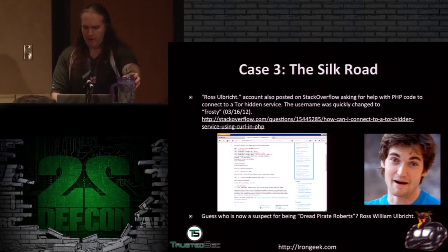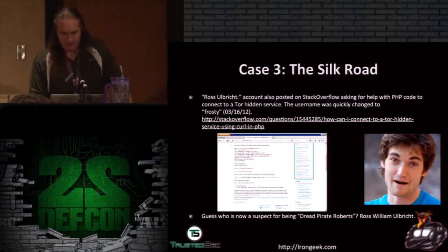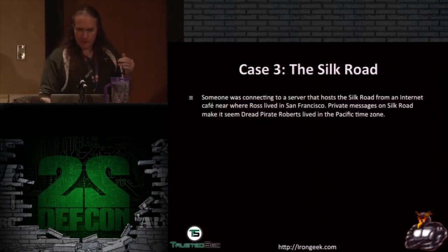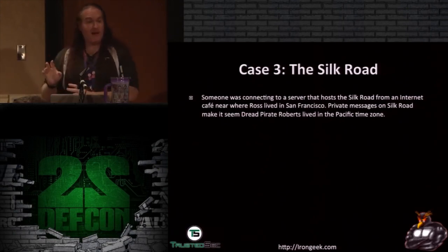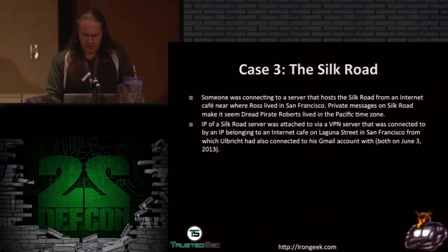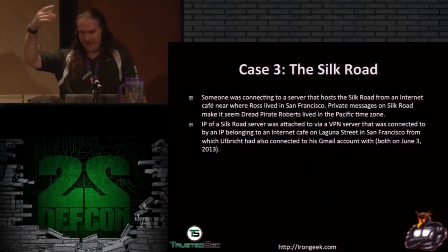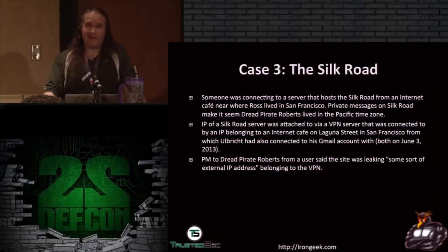So the main suspect at this point for Dread Pirate Roberts became Ross William Ulbricht. They also found he had been logging into Gmail from the same locations — mostly in the Pacific time zone. This becomes like death by a thousand paper cuts. The IP of the Silk Road server was traced via a VPN server that was connected to from an IP belonging to an internet cafe on Laguna Street in San Francisco, from which Ulbricht had connected to his Gmail account before. There was also a PM to Dread Roberts from a user saying the site was leaking an external IP address.